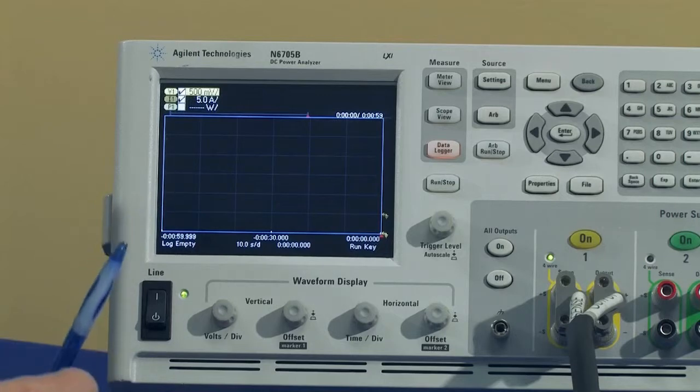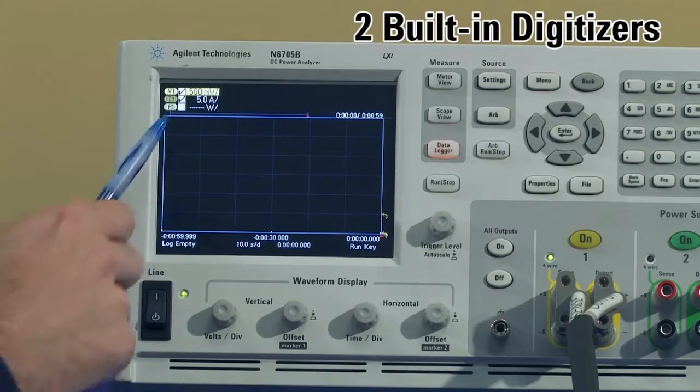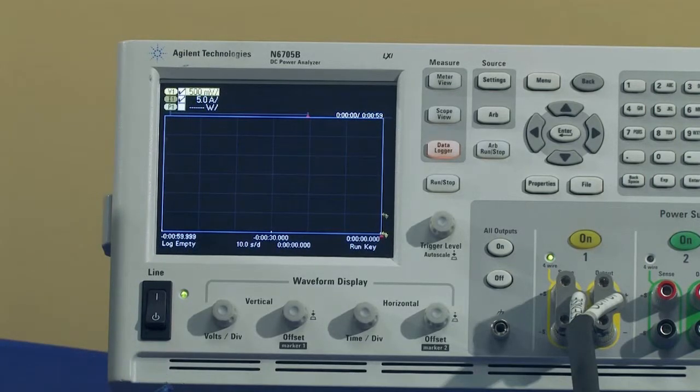The module that we're using is of the precision series, the N6760 series. It actually has two built-in digitizers, so we can measure voltage and current simultaneously. So we can also calculate the power and look at what that's like, but since this is just a charge, we'll just look at the current and the voltage.